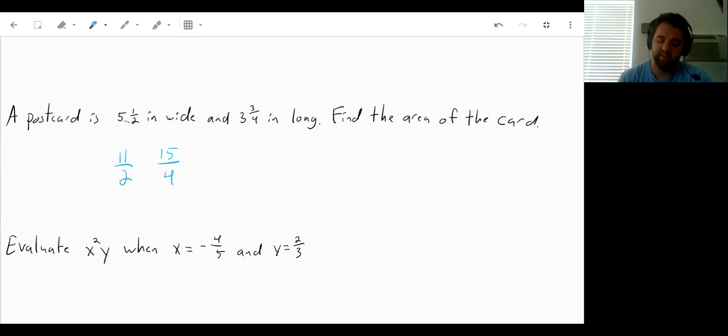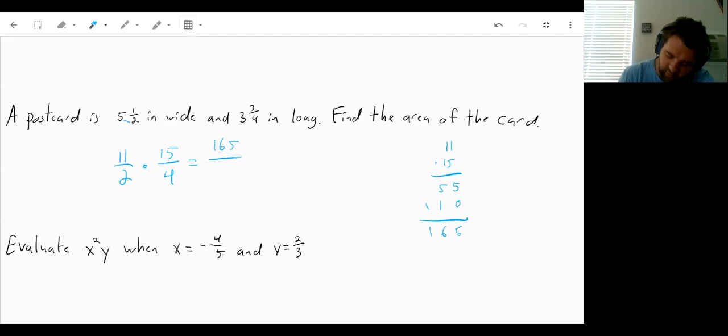And to find the area, it's just length times width. So we multiply these together. So 11 times 15. I don't know that off the top of my head. So 5 times 1 is 5, 5 times 1 is 5.